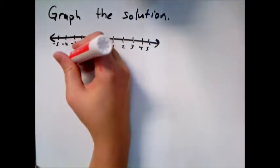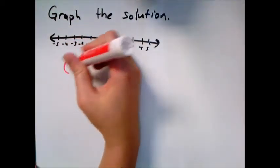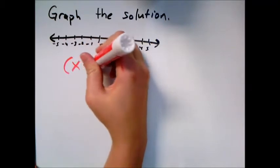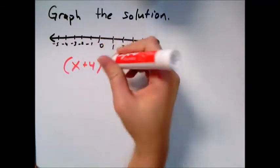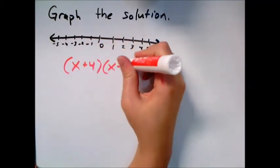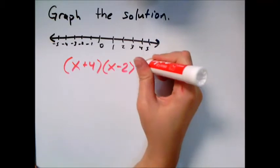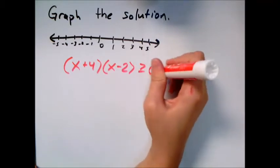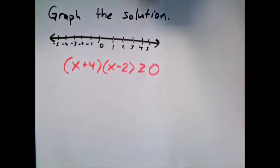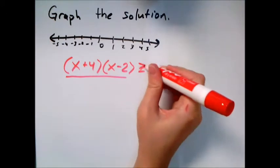Here they're asking us to solve a quadratic inequality — inequality meaning there's a greater than or less than symbol instead of an equals sign. Let's think about what they're really asking: when is all this greater than or equal to zero?